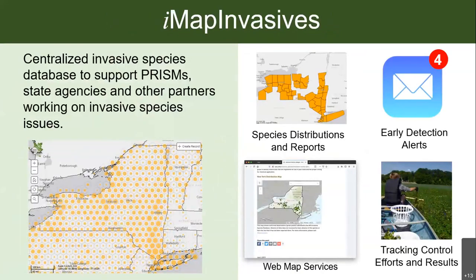That brings us to IMAP Invasives. To fill all of these needs for understanding invasive species distributions, New York is using IMAP Invasives. Several jurisdictions across North America use IMAP — in New York we use it as the centralized invasive species database to support PRISMs like SLILO and other state agencies and partners. The big features include species distribution reports, email alerts for key species so prisms will be alerted when a species is found, web map services, and tracking of control efforts.